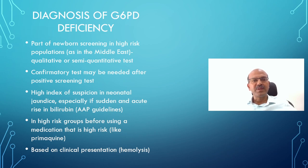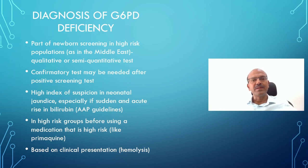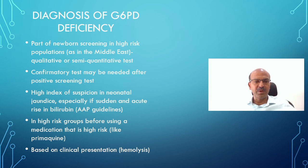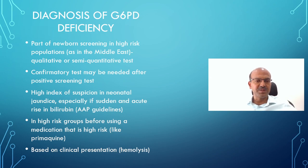The diagnosis of G6PD deficiency is either made as part of newborn screening, during acute hemolysis when you are looking for it, or in cases of unexpected jaundice. It can also be done in high-risk groups before using a high-risk medication like primaquine. If you need to use such a medication and want to rule it out, spot tests for G6PD can be considered.